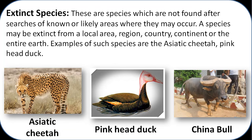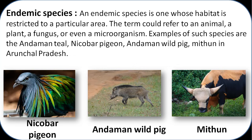Extinct species are those which are not found after searches of known or likely areas where they may occur, and we cannot make any effort to recover these species now. Examples are the Asiatic cheetah, pink-headed duck, and China bull. Endemic species are those whose habitat is very restricted and they are found in particular areas only. Endemic species can be plants, fungi, or even microorganisms. Examples include Nicobar pigeon, Andaman wild pig, and Mithun in Arunachal Pradesh.